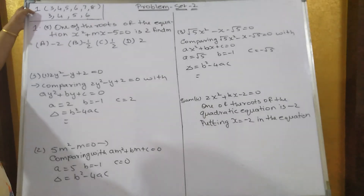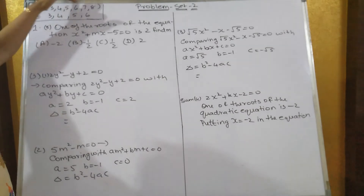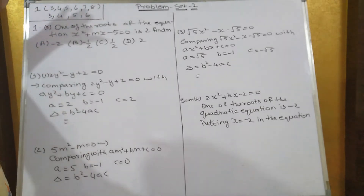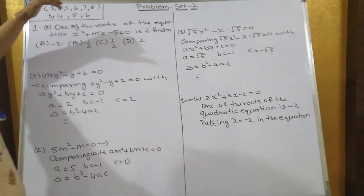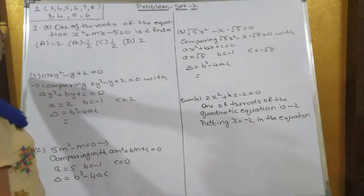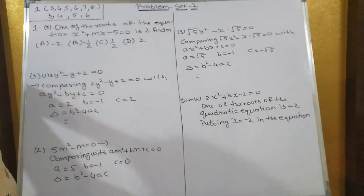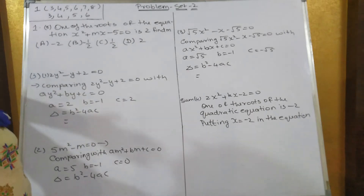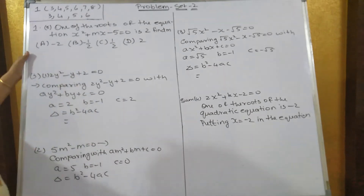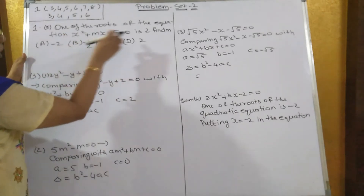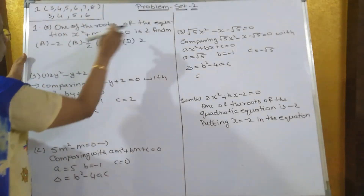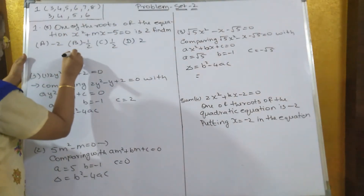The last MCQ question, sum number 8: one of the roots of the equation x² + mx - 5 = 0 is 2. Find m. Put the value of x equal to 2.